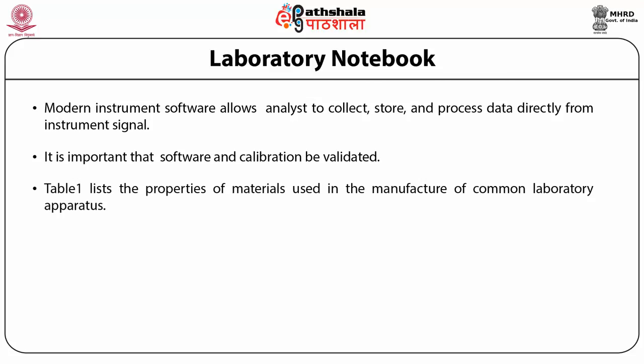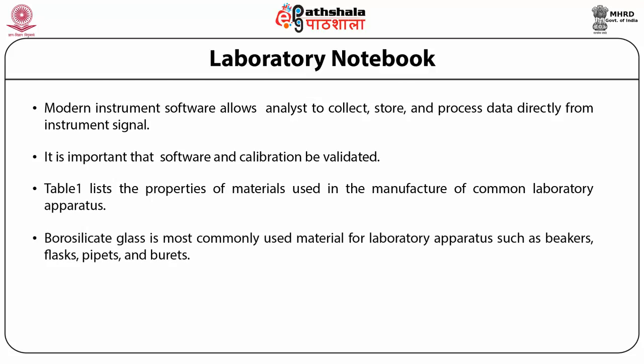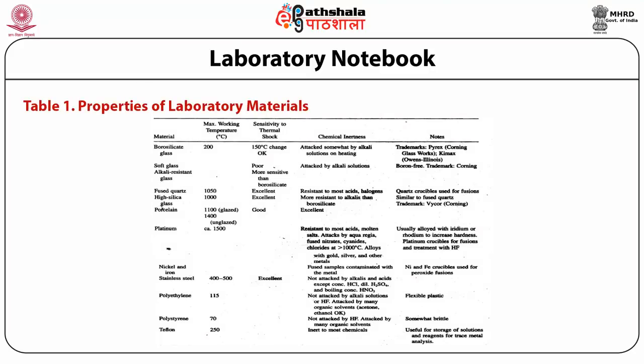The table lists the properties of materials used in the manufacture of common laboratory apparatus. Borosilicate glass is the most commonly used material for laboratory apparatus such as beakers, flasks, pipettes, and burettes. It is stable to hot solutions and to rapid changes in temperature.